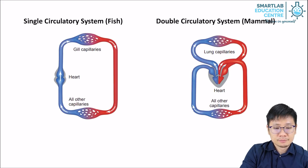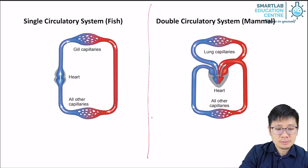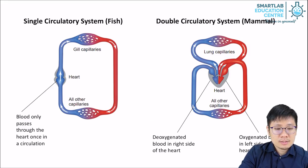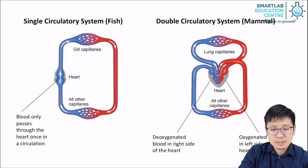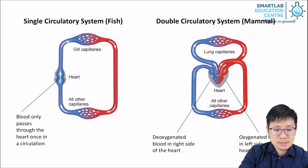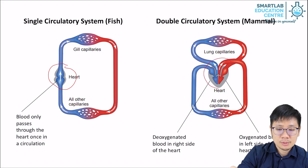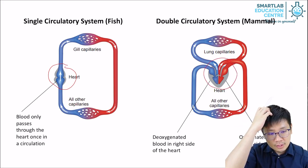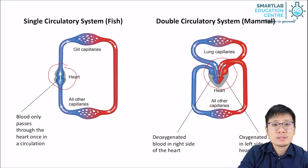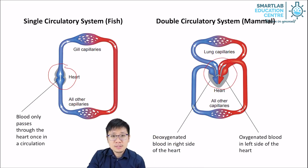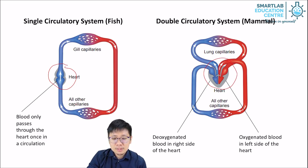Let's contrast a little bit. On my left side here we have a single circulatory system of a fish, and a double circulatory system of a mammal — humans included — on the right side. We can see the heart is much simpler in the fish compared to the heart of a human. In fish, blood runs through the heart once in a single circulation, and only deoxygenated blood runs through it. In the human heart, both deoxygenated and oxygenated blood run through it, so there's a double circulation. They're separated in the middle by a wall.